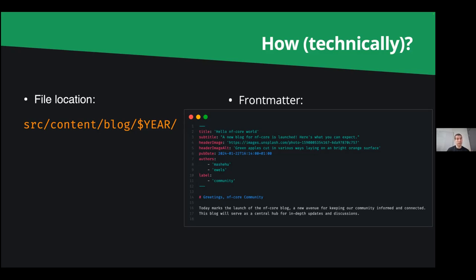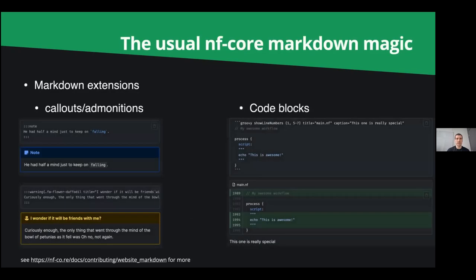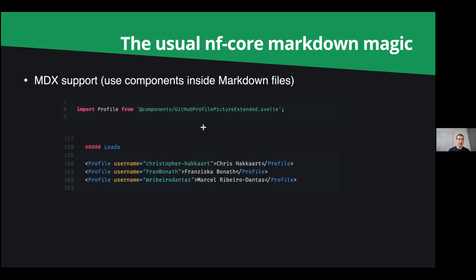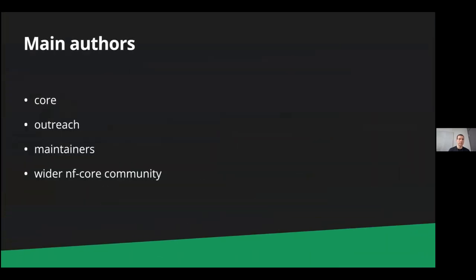Then you just write Markdown — and it's the NFCore flavor of Markdown, so you can write callouts and admonitions, have fancy code blocks with file titles, highlighted lines, and line numbers. You can also use MDX, so you can take whatever component we have on the website, add it into your Markdown, and get it rendered.